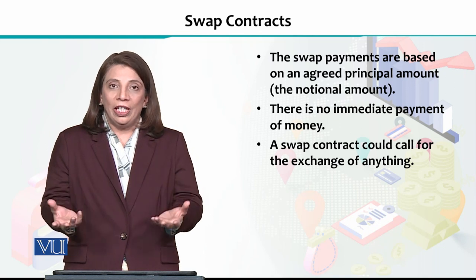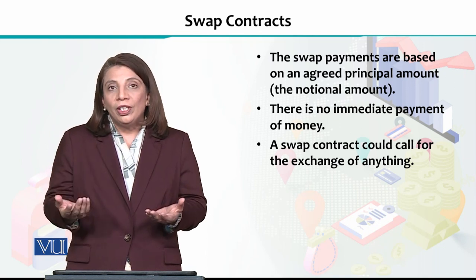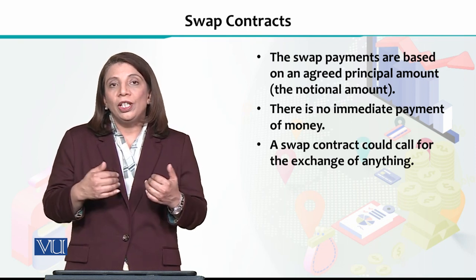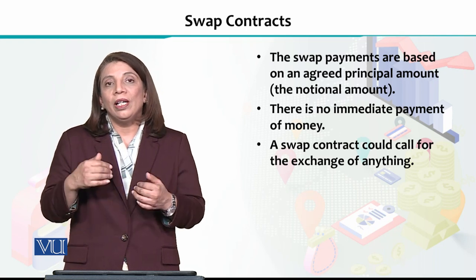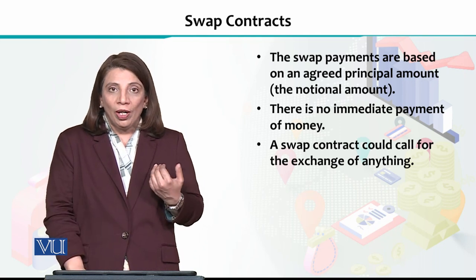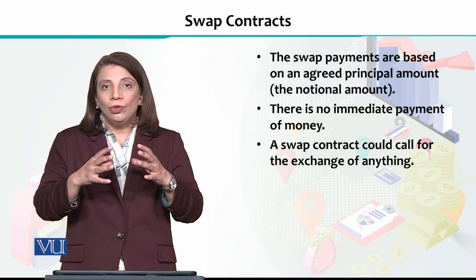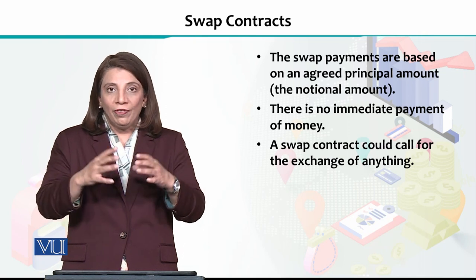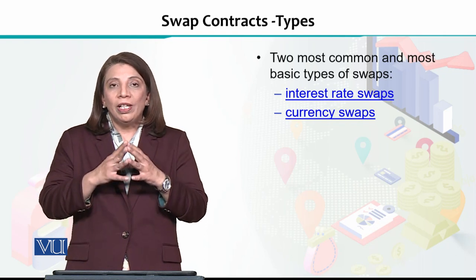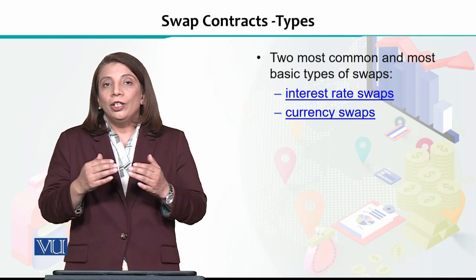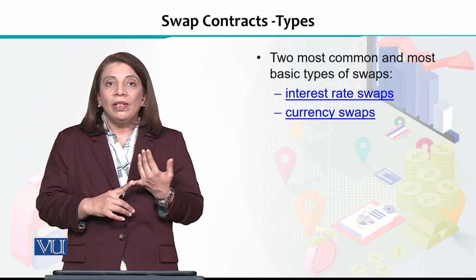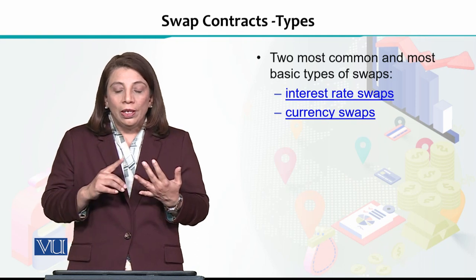Swap contracts can be done for various things — commodities like wheat, precious metals like gold and silver, or foreign exchange can be incorporated into them. There are multiple types of swap contracts, but generally two types are much more common: interest rate swaps and currency swaps.